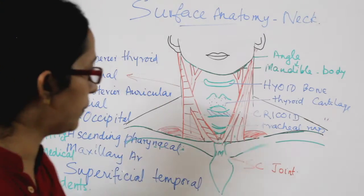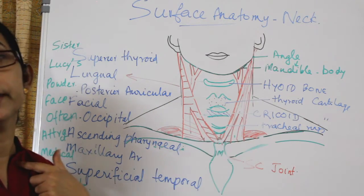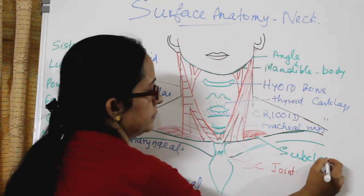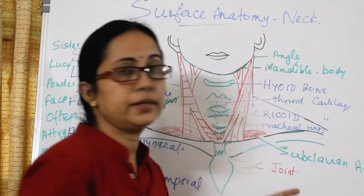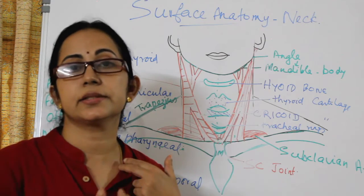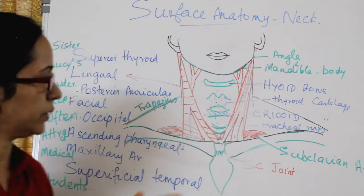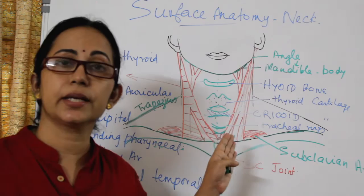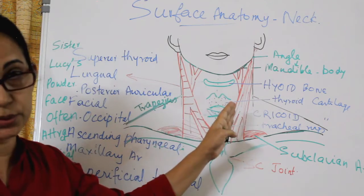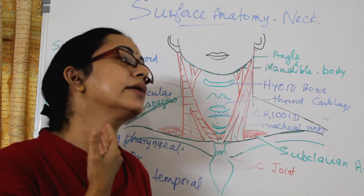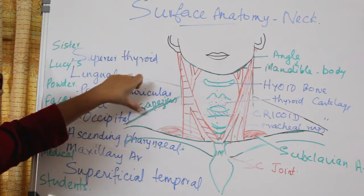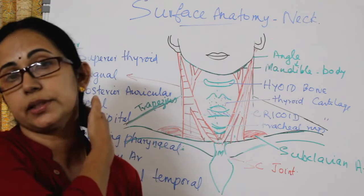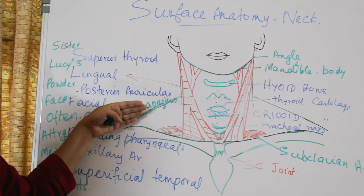Another important artery you can palpate in the neck is the subclavian artery. The pulsation of the subclavian artery is felt just lateral to the clavicular head of the sternocleidomastoid. The sternocleidomastoid divides the neck into an anterior compartment — anterior to the sternocleidomastoid — and a posterior compartment. The trapezius muscle forms the posterior limit of the posterior triangle.